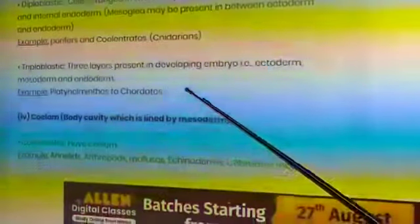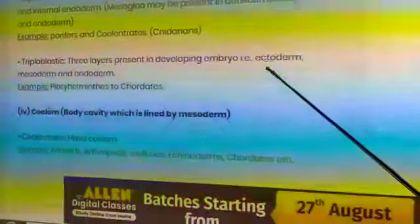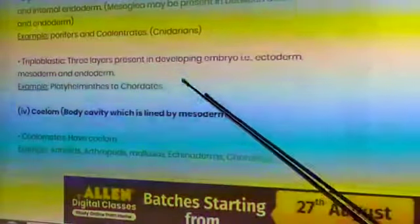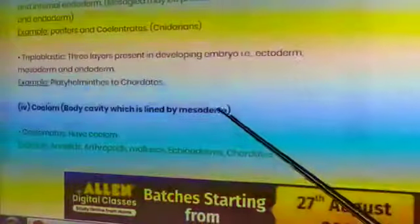Next is triploblastic. Three layers present in developing embryo: ectoderm, mesoderm, and endoderm. Examples: platyhelminthes, chordates.